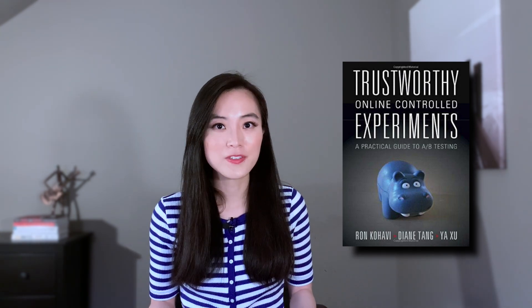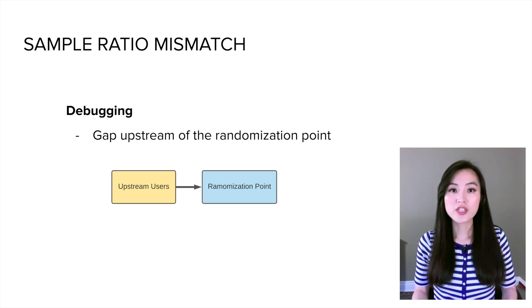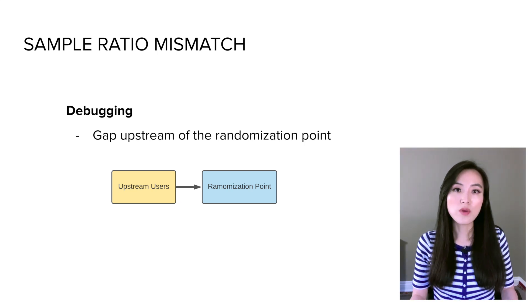We've covered a few factors that may lead to sample ratio mismatch. Next, let's go over how to debug it if we observe such an issue. I'll summarize the recommendations from the book Trustworthy Online Control Experiments, because it's pretty comprehensive and practical. We can start by checking if there's any discrepancy upstream of the randomization point.